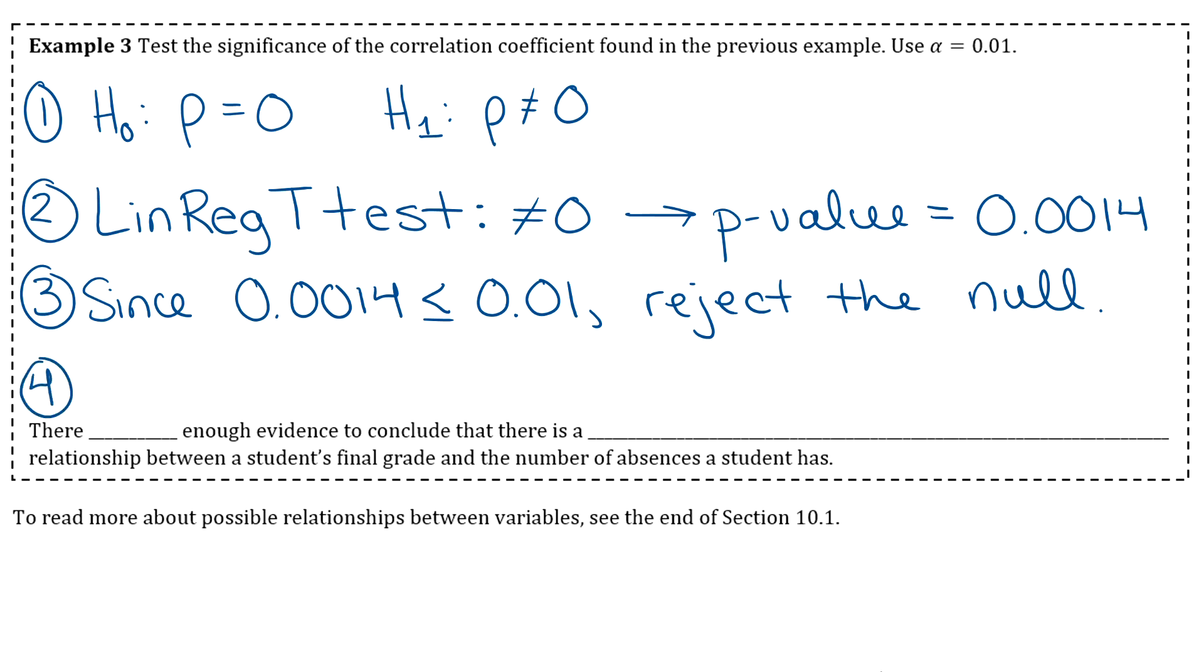And then step 4, this one does kind of change with this hypothesis test. We're not going to use one of our main four statements. We're going to say this a little bit different. The null hypothesis states that there is no correlation between the two variables. So if we reject that, then basically we're saying the alternative, which is that there is a significant correlation between the variables.